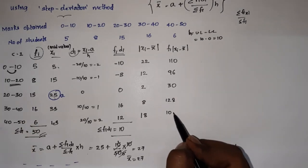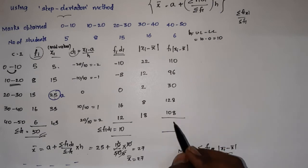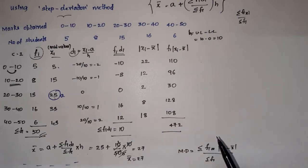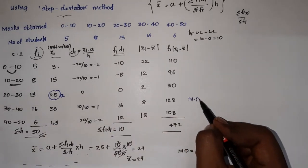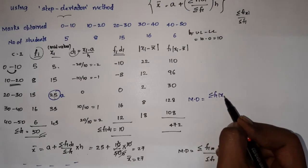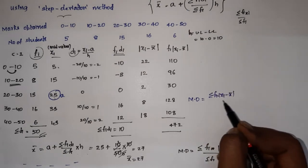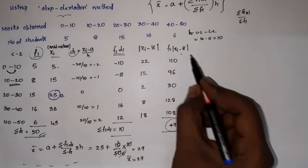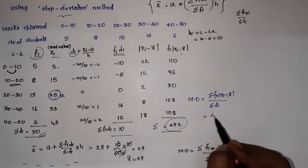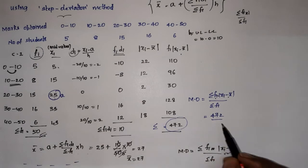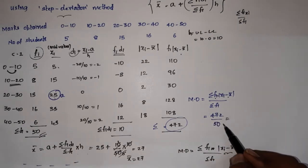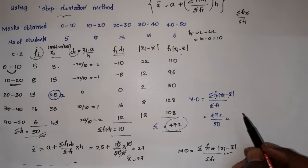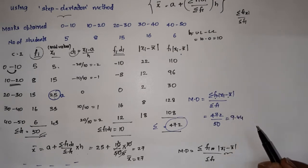And 6×18 = 108. Adding all fi·|xi − x̄|: 110 + 96 + 30 + 128 + 108 = 472. Mean deviation formula: MD = Σfi·|xi − x̄| / Σfi = 472 / 50 = 9.44. So the mean deviation is 9.44.